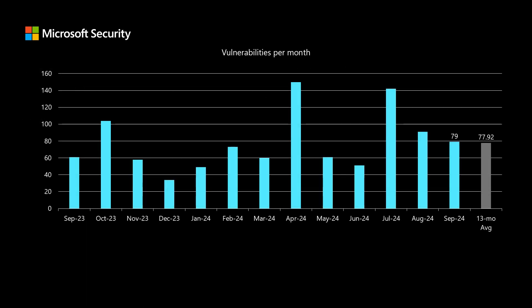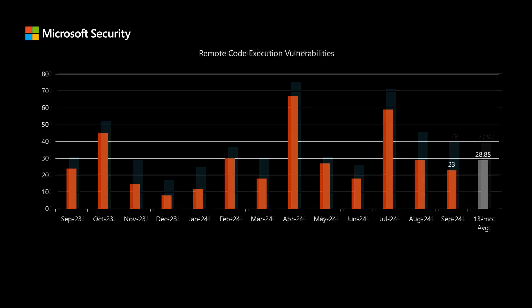Before I dig into today's release, I like to compare it to the previous 12 months to see how it stacks up. There are 79 newly disclosed CVEs in today's set, and that's just a little bit higher than our average of just under 78 CVEs per month. I'll talk to remote code execution vulnerabilities — these are the impact that typically provide the most risk, as they would allow a threat actor to install software and other high-level activities. We've been averaging just under 29 per month, and there are 23 of these in today's set.